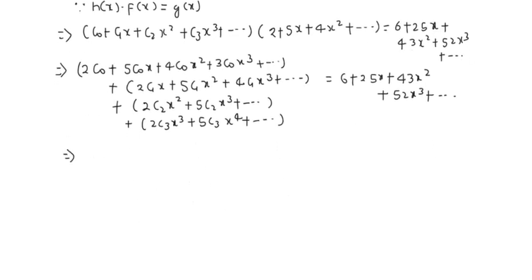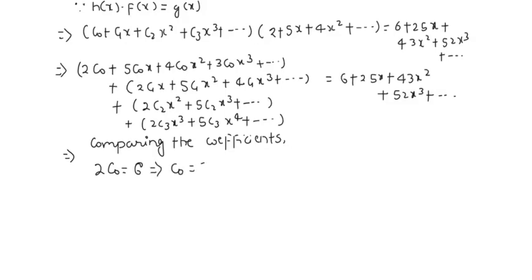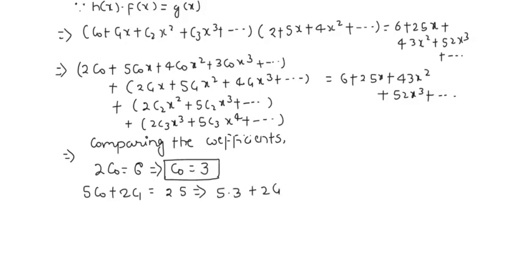Now we compare coefficients. Comparing the constant term: 2c₀ = 6, so c₀ = 3. Comparing the coefficient of x: 5c₀ + 2c₁ = 25. Substituting c₀ = 3 gives 15 + 2c₁ = 25, so 2c₁ = 10, giving c₁ = 5.